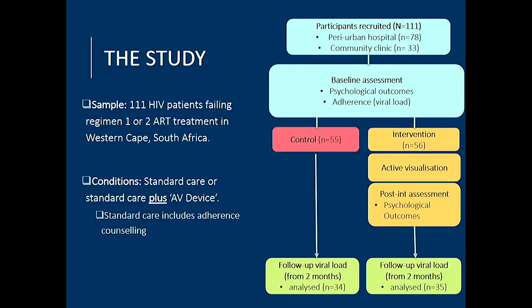The study itself ended up recruiting 111 HIV patients — these were patients who were failing on their Regimen 1 or 2 treatment. They were recruited from two sites: a peri-urban hospital and a community clinic. They completed a baseline assessment and then were randomized into one of two conditions: the control and intervention group. In this context, standard care received by all participants includes adherence counseling — the doctor talking to the patient about their non-adherence and trying to encourage behavior change. Our intervention patients also saw the active visualization device. We collected follow-up data from two months after they saw the intervention, and retrospectively retrieved baseline viral load from their blood test records.